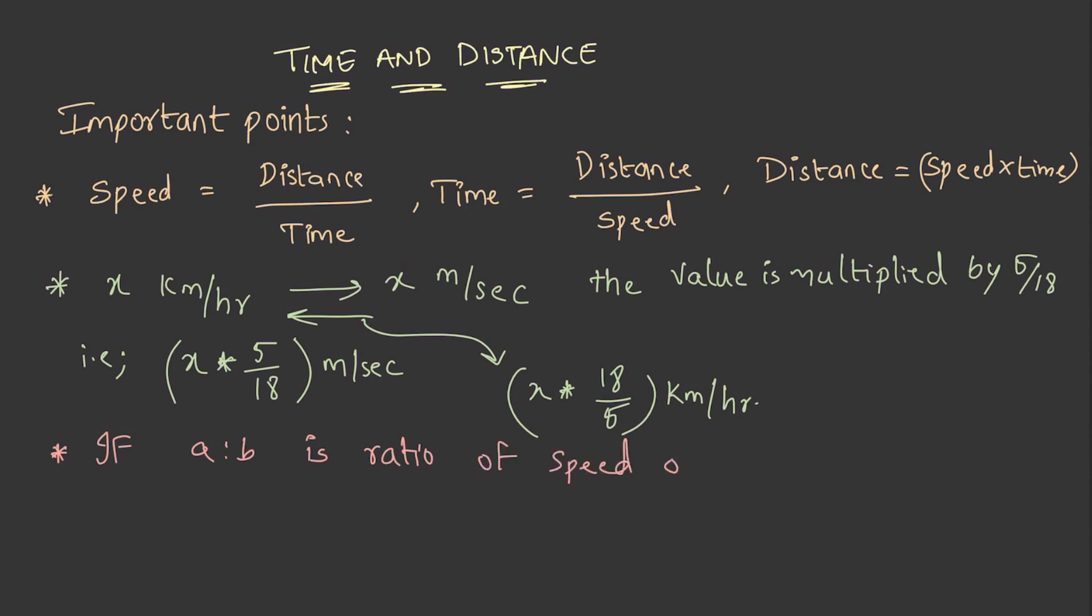If A is to B is the ratio of speed of A and B, then time taken ratio is 1 by A is to 1 by B, that is B is to A.